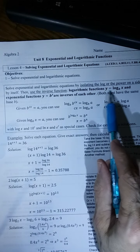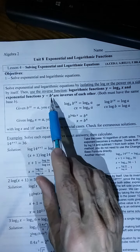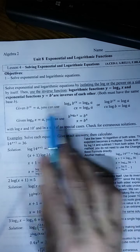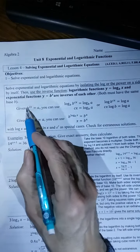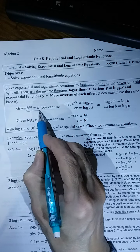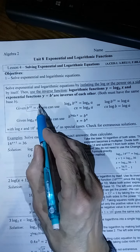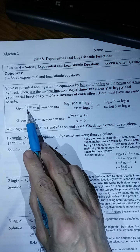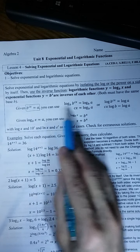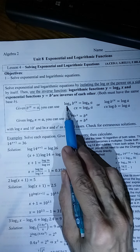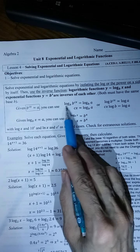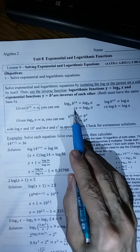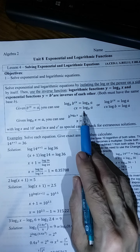Logarithmic functions y = log base b of x and exponentials y = b to the power x are inverses of each other — both bases have to have the same b. So, suppose we start off with an exponential on a side by itself. We can use its inverse and take log base b of both sides, in which case log base b undoes b to the power, and those cancel, giving us simply the exponent cx.